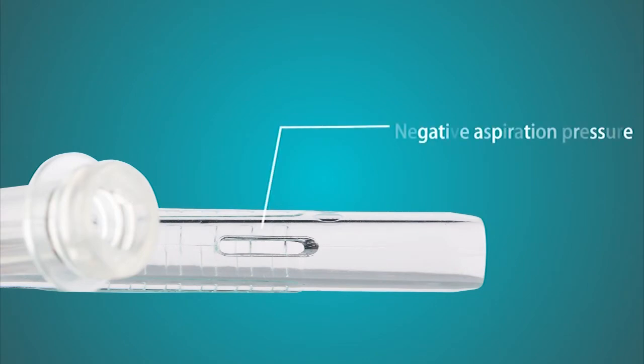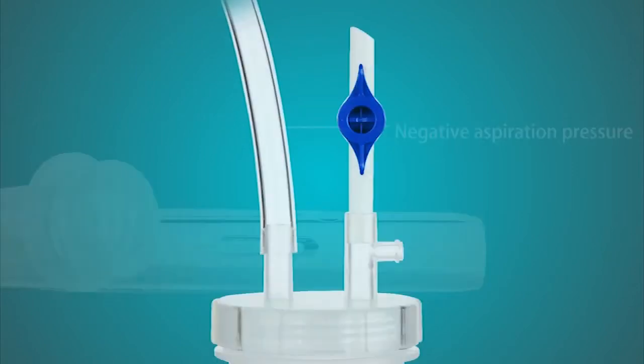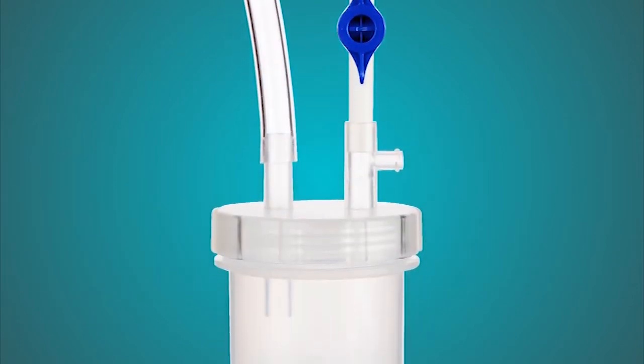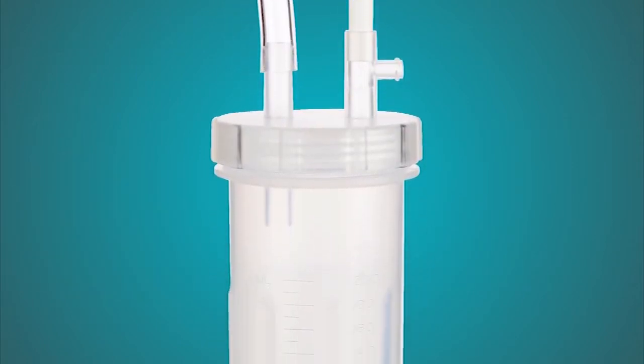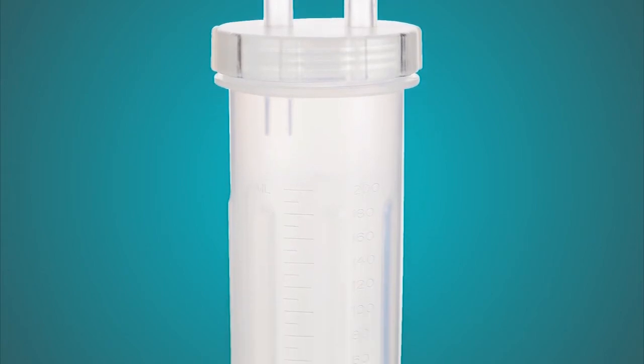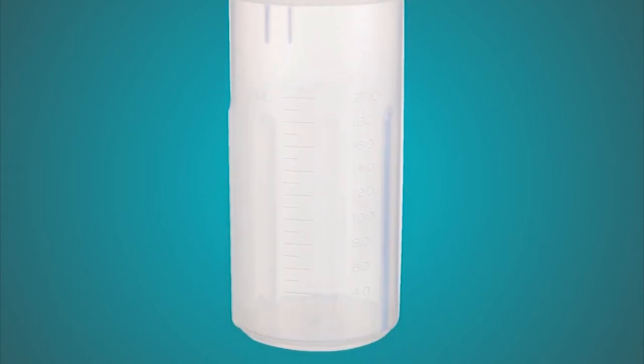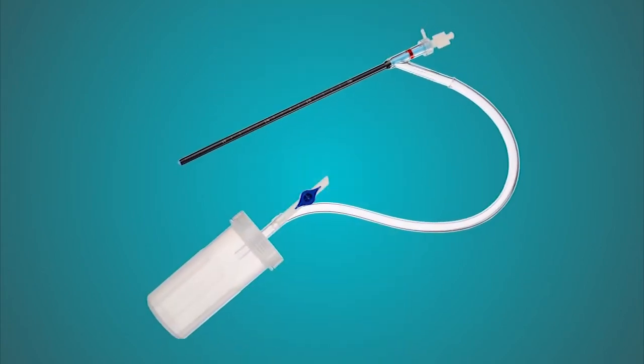The collection bottle is used for collecting the stone fragments. The bottle can be sent directly to the laboratory. Connect the oblique branch of the access sheath to the stone collection bottle using a clear and flexible tubing.